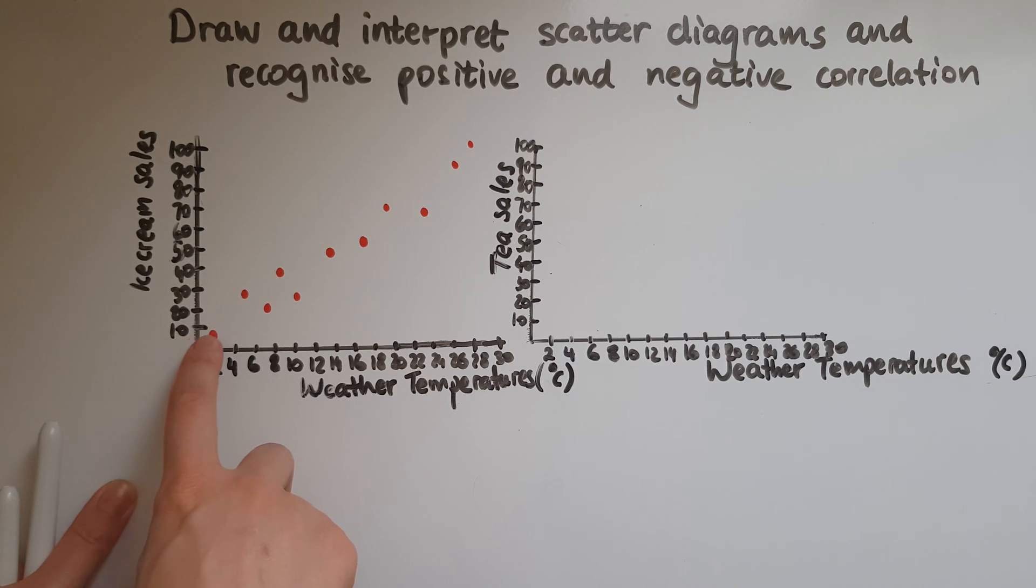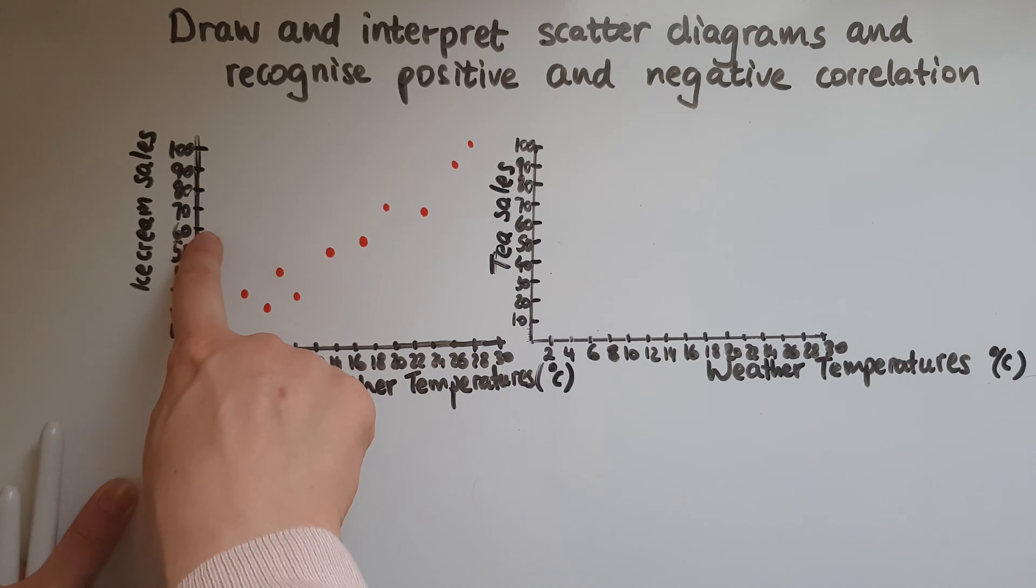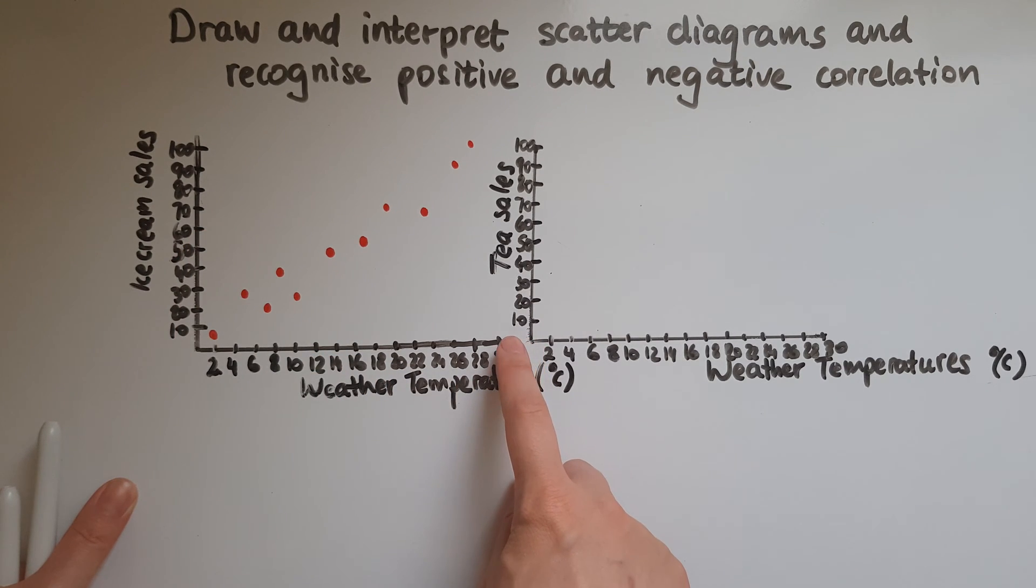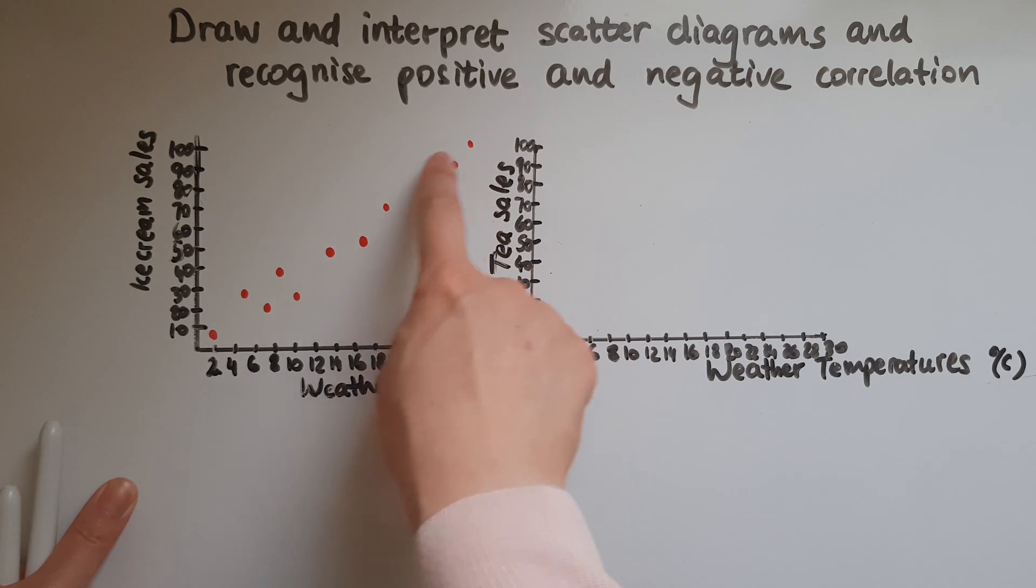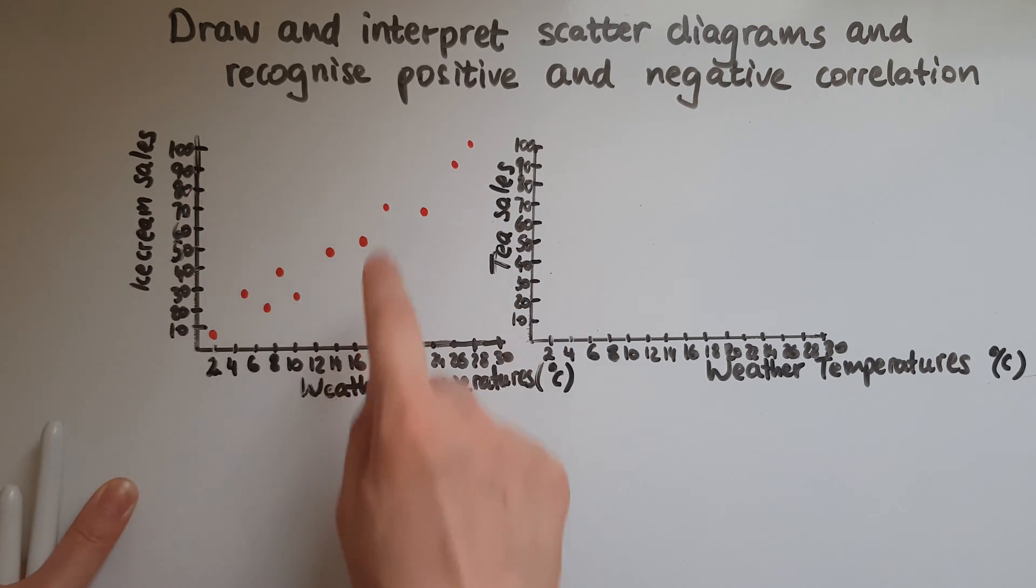And then when the temperatures increased, let's say you went to about 16 or 17 degrees, then ice cream sales went up to about 55, and when the weather temperature was about 30 degrees we had 100 ice cream sales.